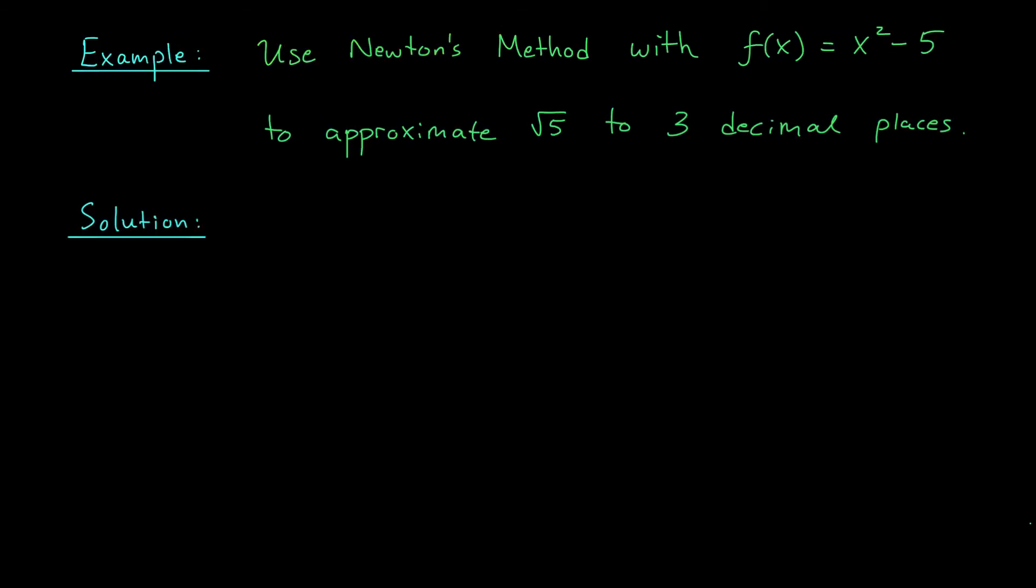Surprise! We got a bonus second example in this video. For our second problem, I want to use Newton's method with the function f x equals x squared minus 5 to approximate the square root of 5 correct to three decimal places. Okay, well notice that Newton's method is going to approximate the roots of this function, right?